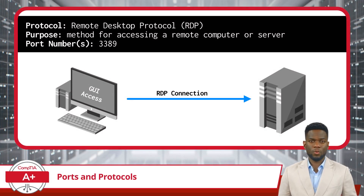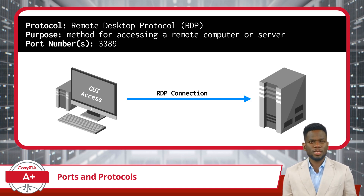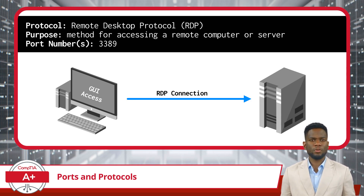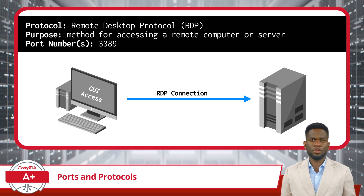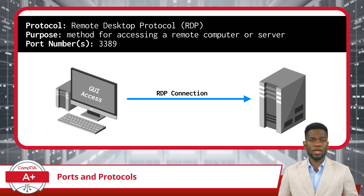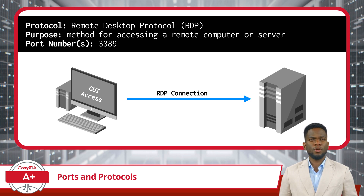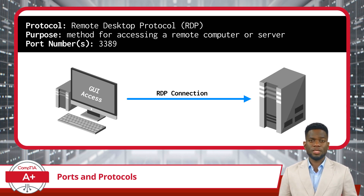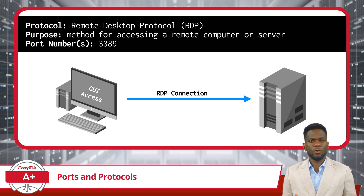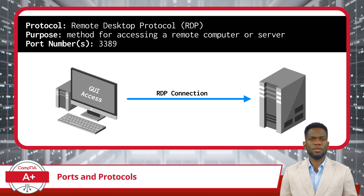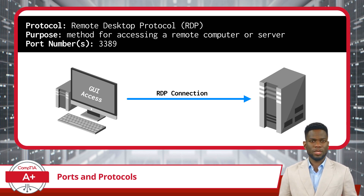For our last protocol, we have RDP, or Remote Desktop Protocol. This is another method for accessing remote computers or servers, much like SSH and Telnet. However, RDP stands out by providing a graphical user interface for the remote connection, meaning users can see and interact with the desktop environment of the remote computer as if sitting right in front of it. RDP is extensively used in corporate environments for remote administration, remote work, and IT support. It primarily operates on port 3389 and facilitates the full desktop experience, including support for Windows graphics and devices.